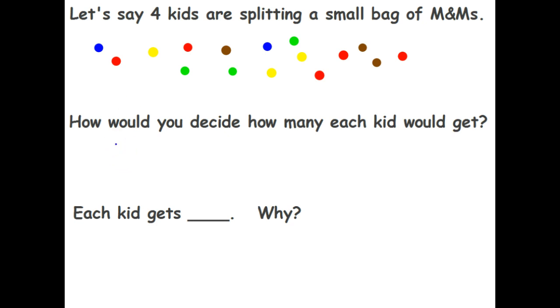So the simple thing to do is say, okay, 16 M&Ms, we want to divide it evenly among four people. And if you know your times tables, you know that four times four is 16, so 16 divided by four is four. Each kid gets four.